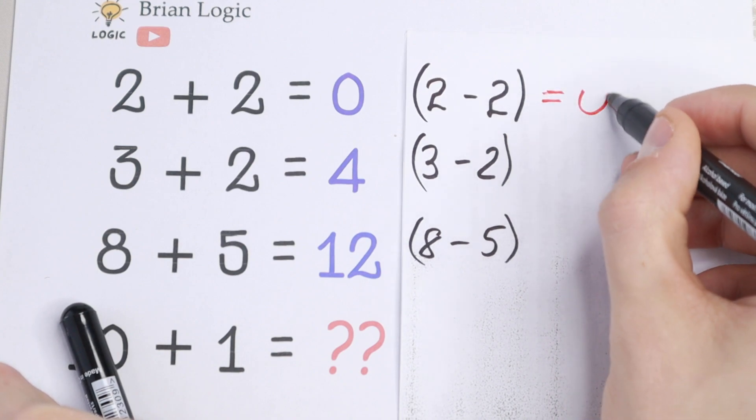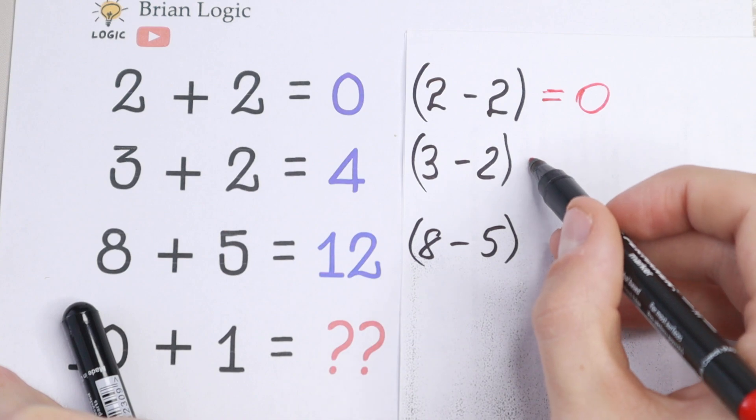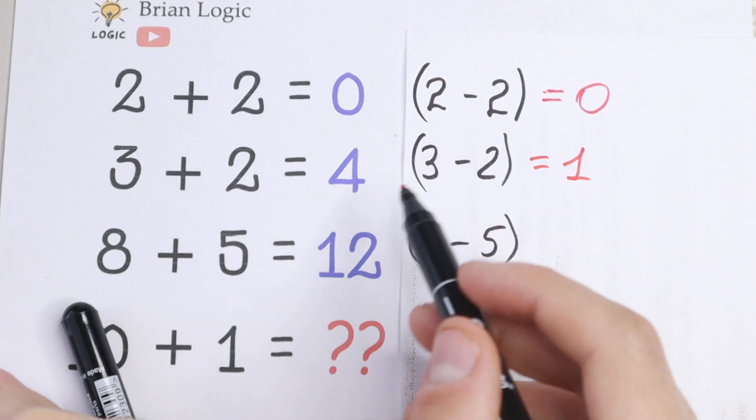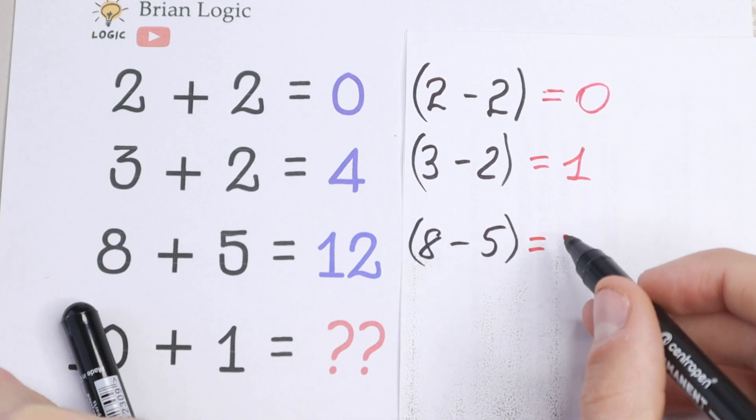because this is the same as right here. If we subtract right here, we will have 1. As you can see, not the same as in the second row. But if we subtract from the third row, we'll have 8 minus 5. This is equal to 3.